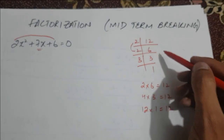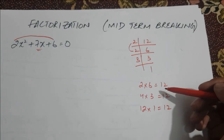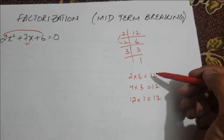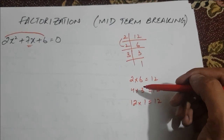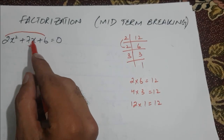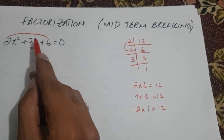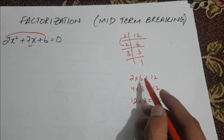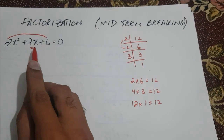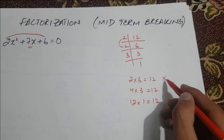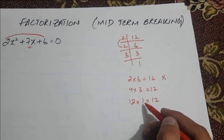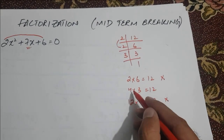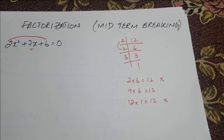We have factorized 12. Now we have to choose the two factors of 12 that sum up to make plus 7x. Remember, we also keep an account of the relative sign. So 2 plus 6 comes out to be 8 — these cannot be the factors. 12 plus 1 comes out to be 13 — these also cannot be the factors. We use 4 plus 3 — these can be the factors.